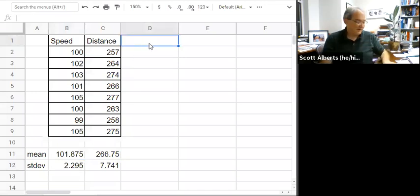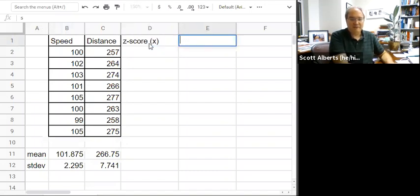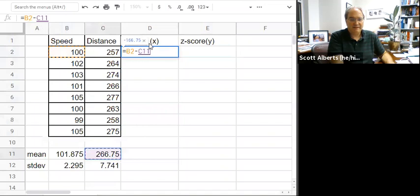Once we have that now we're going to calculate the z-score for x and the z-score for y. And remember we can do that by taking the number minus the mean divided by the standard deviation.